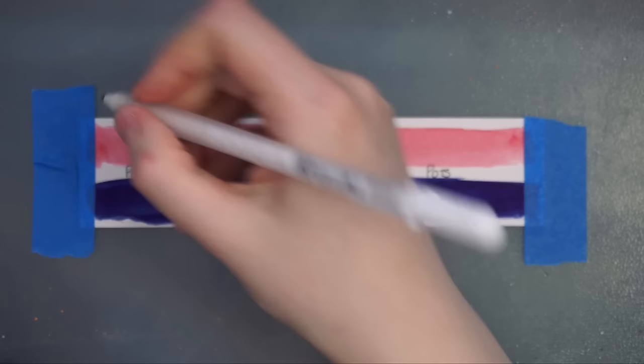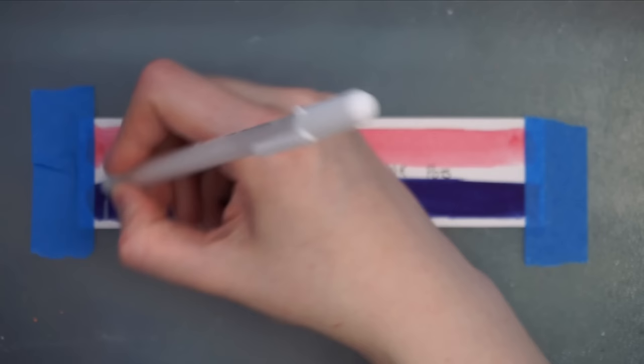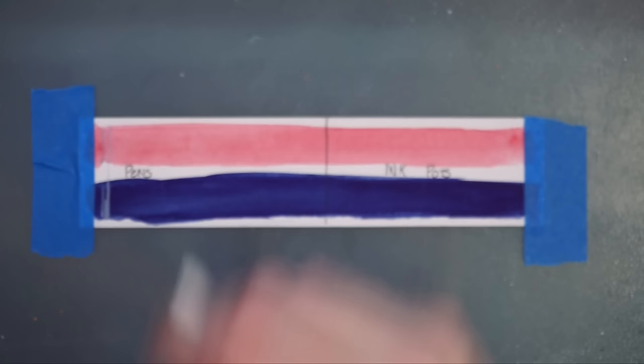Starting off with the pens again, the first one up is the Sakura Jelly Roll. This is definitely one of the pens that does not like working well on the extremely pigmented watercolors. It picks up the underlying color and mixes in with the white.